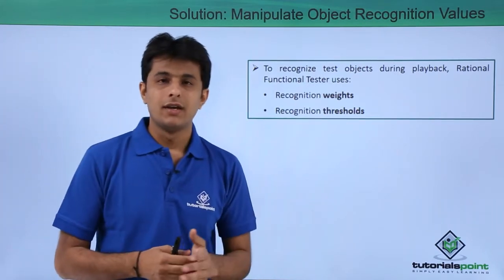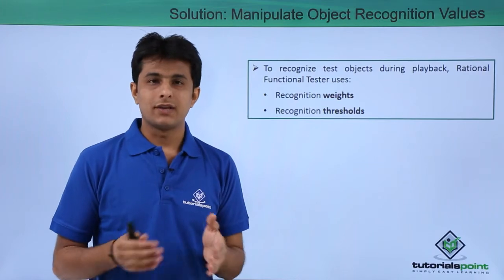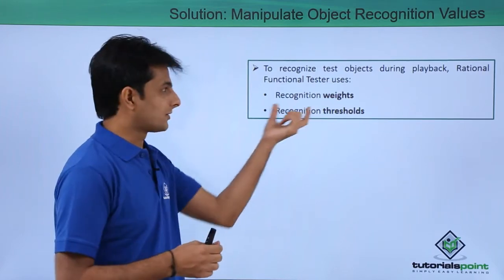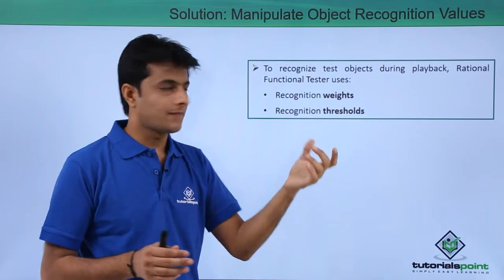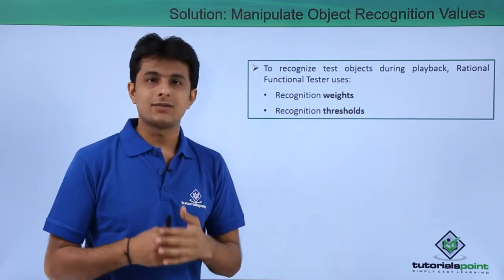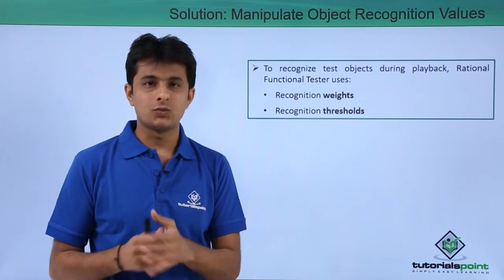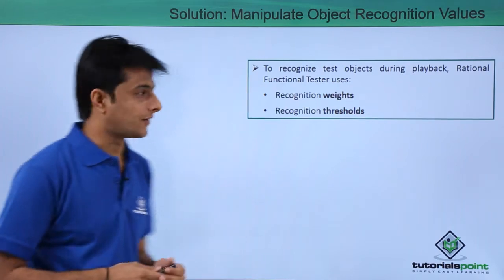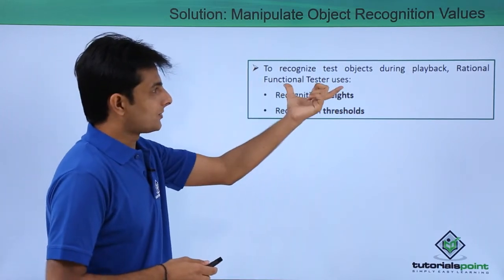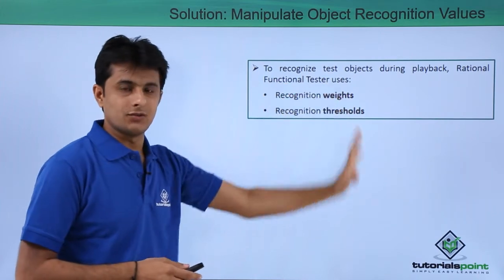The object recognition will be divided into two parts. It finds out the object based on recognition weights - that's nothing but the preference. And second one is the recognition threshold - that means nothing but expected result. To recognize test object during playback, Rational Functional Tester uses these two things.